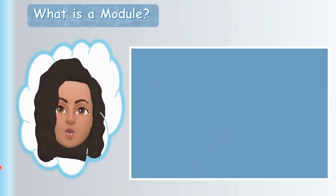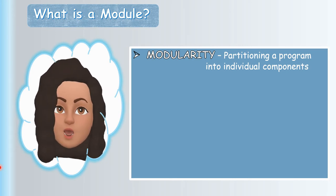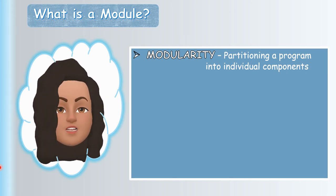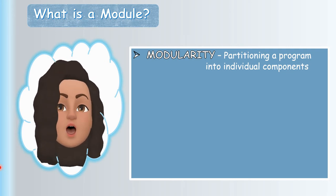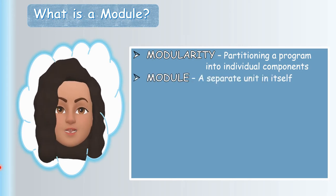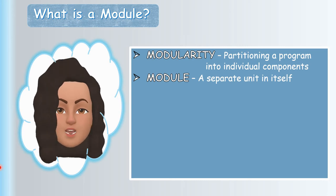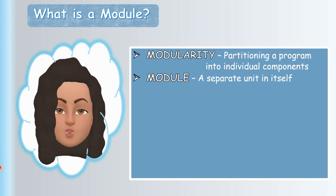A module is a part of a program. We divide a bigger program into many individual components — this is called modularity. Partitioning or dividing the program into individual units is known as modularity, and every individual unit is known as a module. Now, what are the features of this module, and why do we need modules in a program?